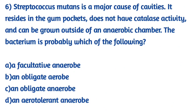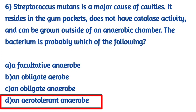Question number 6: Streptococcus mutans is a major cause of cavities. It resides in the gum pockets, does not have catalase activity, and can be grown outside of an anaerobic chamber. The bacterium is probably which type? The right answer is option D — aerotolerant anaerobic. Streptococcus mutans causes tooth cavities.